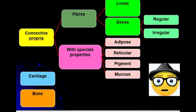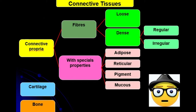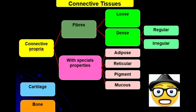Let's look at the classification of connective tissue. Proper connective tissue includes fiber connective tissue and connective tissue with special properties. Fiber connective tissue contains fibers in the extracellular matrix — collagen, elastic, and reticular fibers. Fiber connective tissue can be classified into loose and dense connective tissue. Dense connective tissue can further be classified into regular and irregular, depending on the location of fibers in the extracellular matrix.